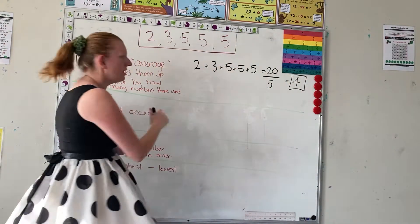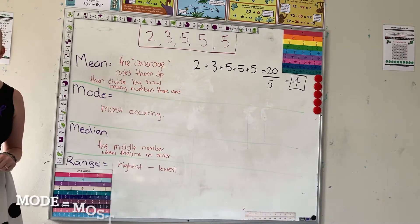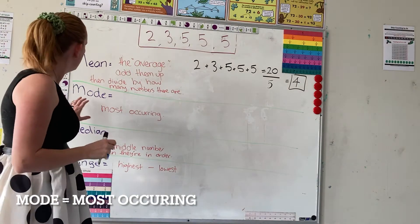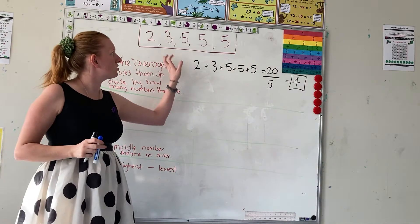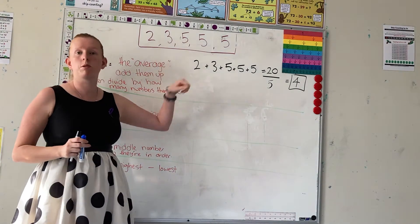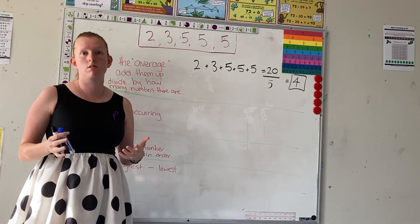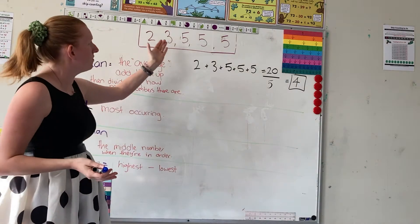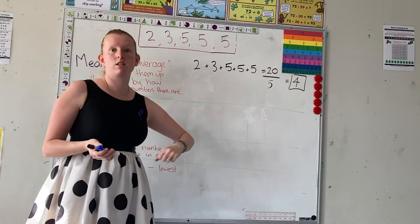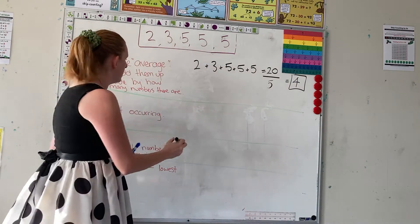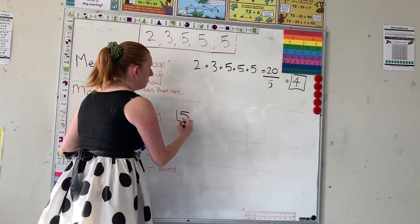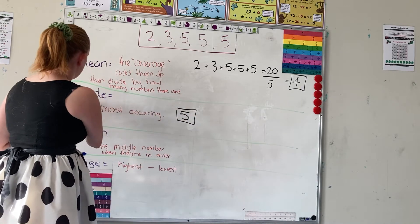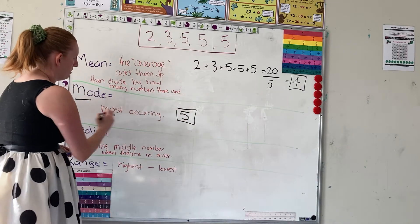Now we're going to try and find the mode, which is the most occurring number. You're just trying to figure out which number appears the most number of times. Here, five appears three times, so that is our most occurring number. Think: mode is most.